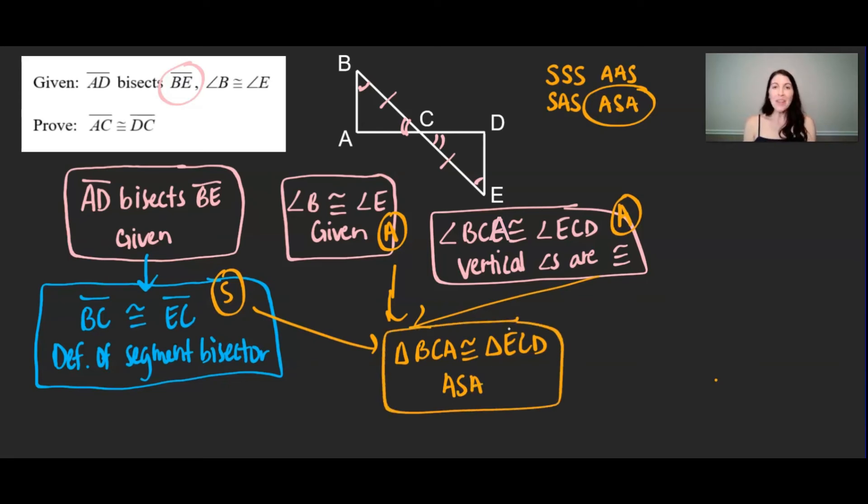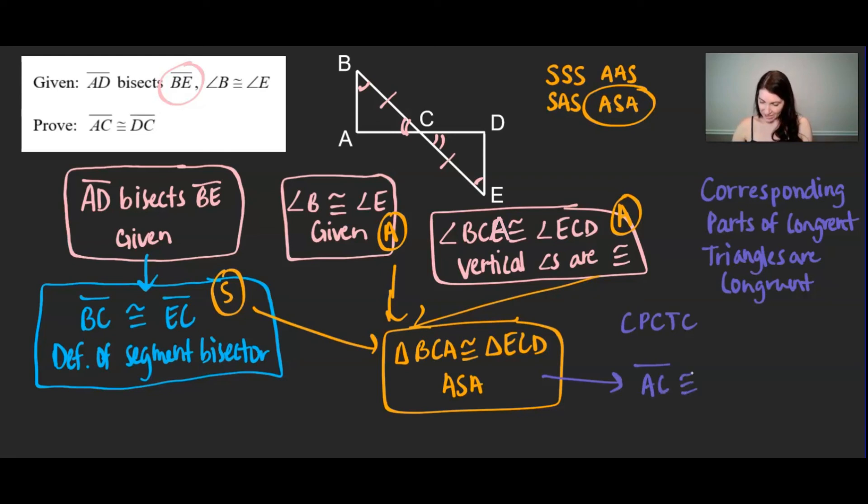All right now that I know these two triangles are congruent each of their corresponding angles and sides are also congruent and that is called CPCTC. And let me write out again what that stands for. Corresponding parts of congruent triangles are congruent. So because I already proved the triangles are congruent and if you want to use CPCTC you have to first prove two triangles are congruent. Then I can conclude side AC must be congruent to side DC.